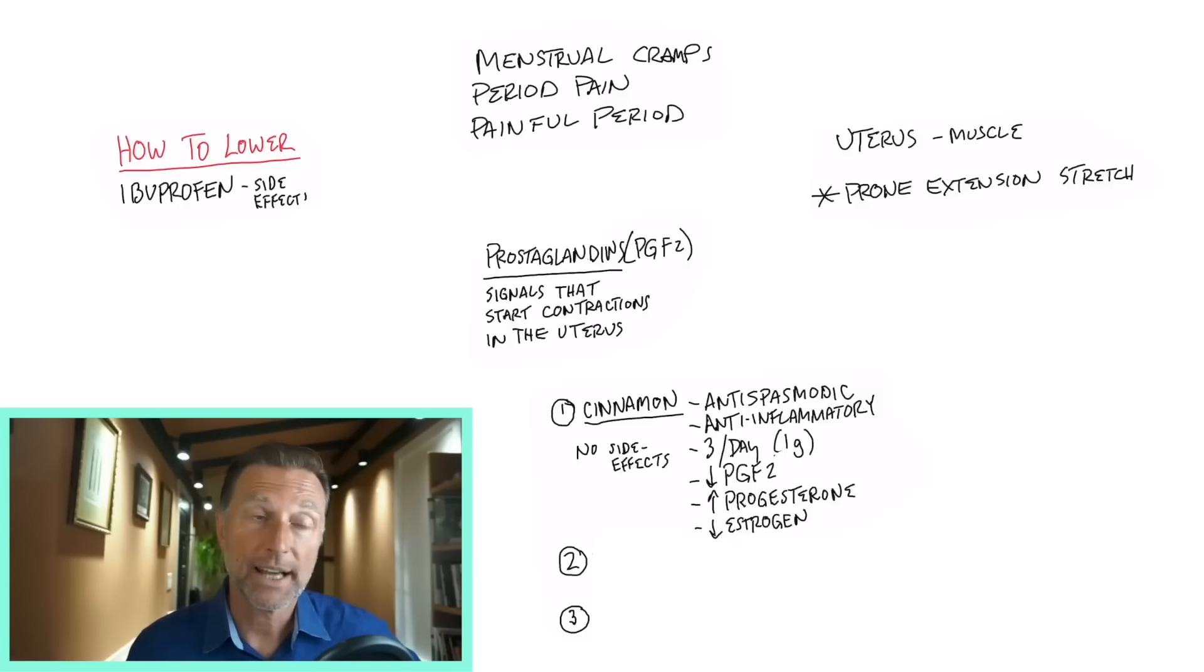Now, the question you're probably asking right now is, why are these prostaglandins too high in the first place? It's really in a balance with two hormones. We have an excessively lowered amount of progesterone and too much estrogen. That is the combination that creates this problem. And it just so happens that cinnamon lowers estrogen and increases progesterone. So it not only affects that prostaglandin, but it helps to go deeper.